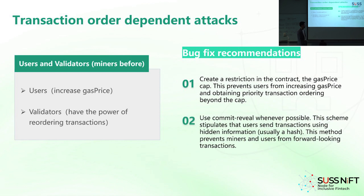A better way would be to use a commit-reveal pattern whenever possible. This scheme stipulates that users send transactions using hidden information. So the user can hash or encrypt his answer and submit it, and then the contract will decrypt it. This method prevents miners or validators and users from forward-looking transactions. So even when the attacker sees this transaction in the mempool, he cannot just copy it because he has no means to decrypt it. Only the smart contract has the power to authenticate that this user actually signed with his private key — a valid signature.